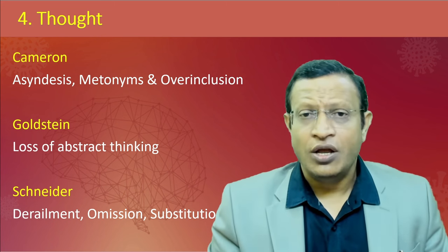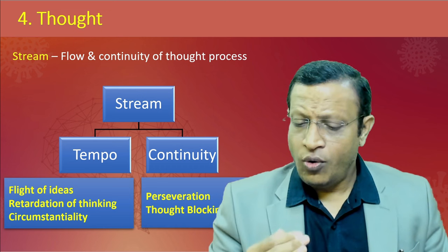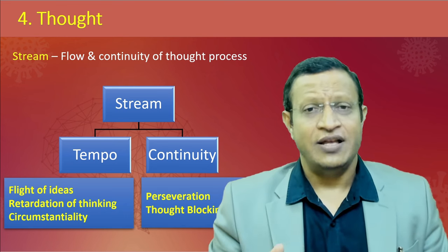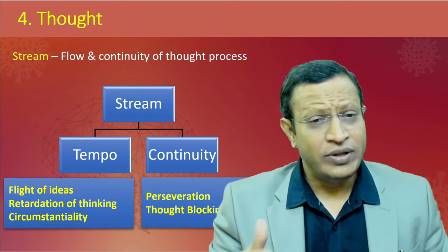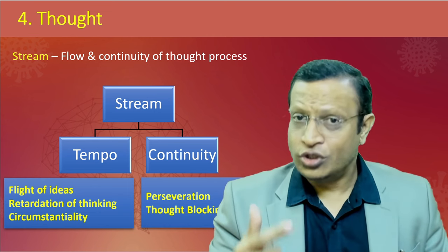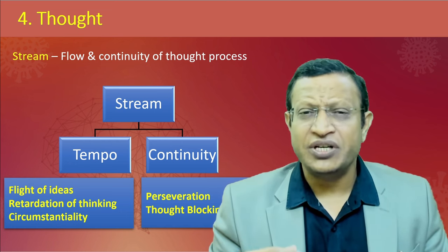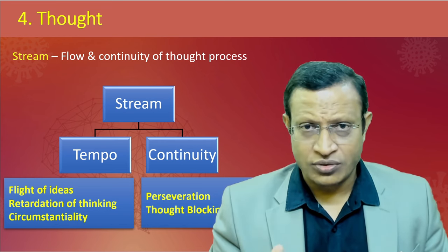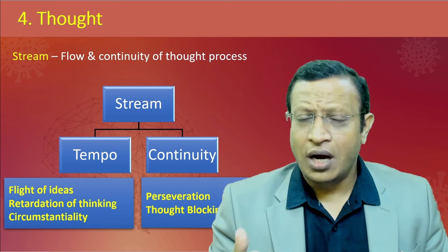Coming to stream - stream is the flow and continuity of the thought process. Disorders of stream include disorders of tempo and disorders of continuity. With regard to tempo: whether thought is flowing very fast (flight of ideas), slow (retardation of thinking), or at a normal pace but the patient is talking about very trivial things (circumstantiality). These are disorders of tempo. Coming to disorders of continuity, these include perseveration and thought blocking. Each of these phenomena will be described in a separate video.